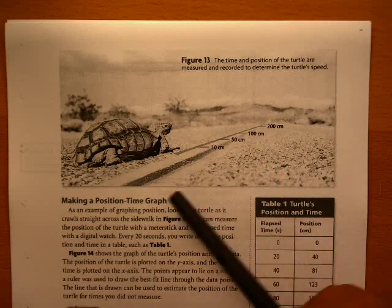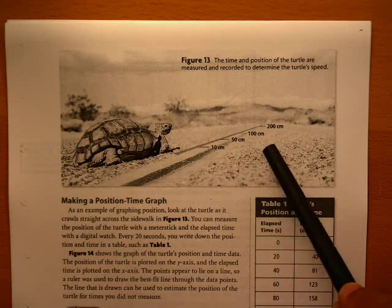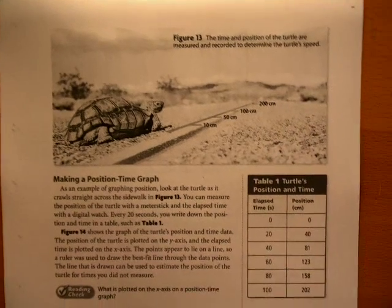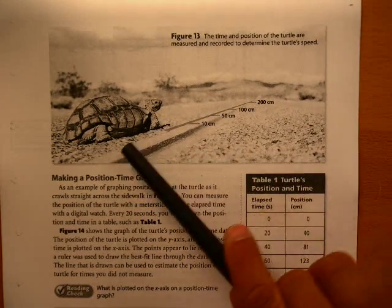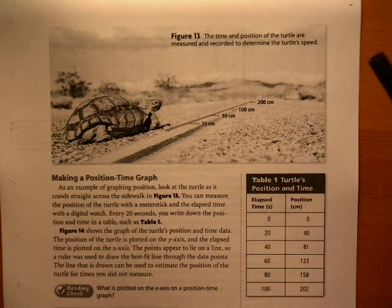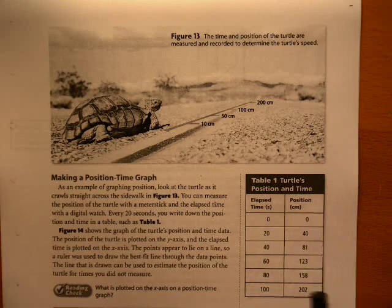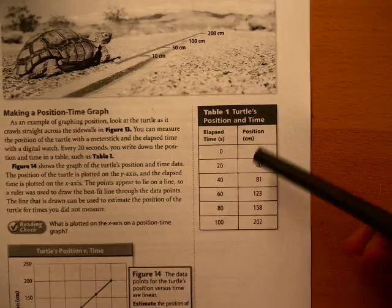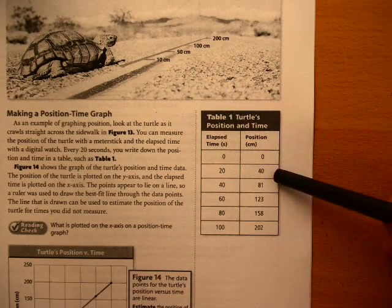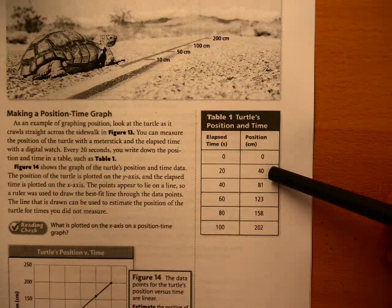But I guess we've got a meter stick and we've measured out like 10 centimeters, 50, 100, all the way up to 200 centimeters. And if we wanted to, we could let this little guy just walk down the road here, and using like a watch or a phone or something, we could time it, and we can make a little table of data here, saying for every 20 seconds he's going to travel a certain amount of distance.